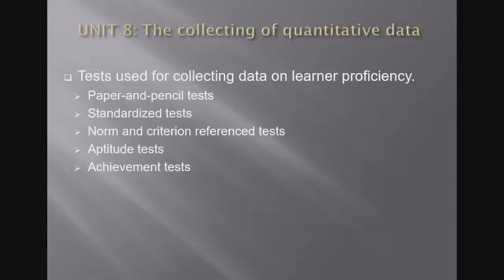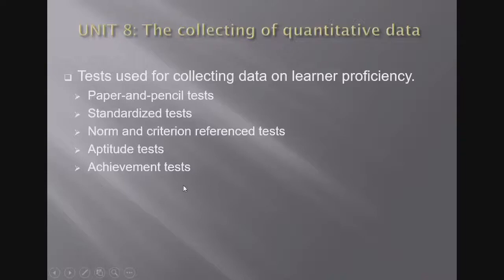For collecting quantitative data, tests used for collecting data on learner proficiency include paper and pen tests, standardized tests, norm and criterion-referenced tests, aptitude tests, and achievement tests. You can group learners by criteria, test who got better or lower marks, and use standardized evaluation for all of them.